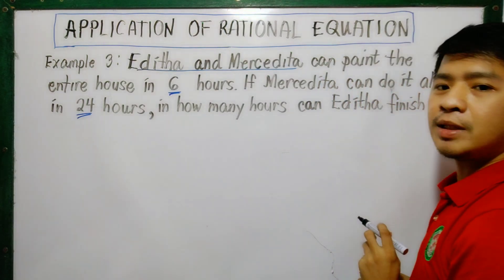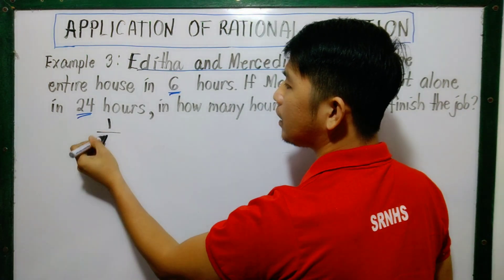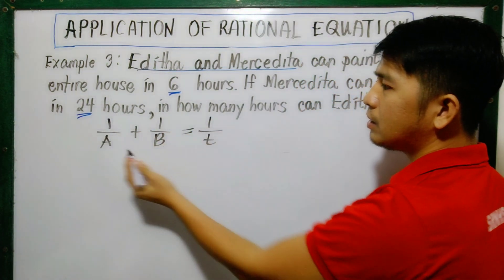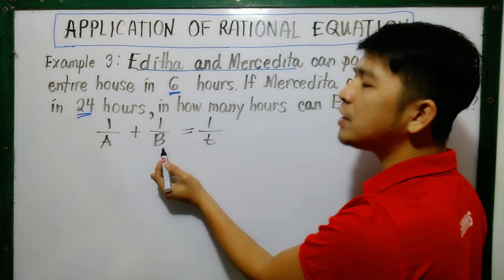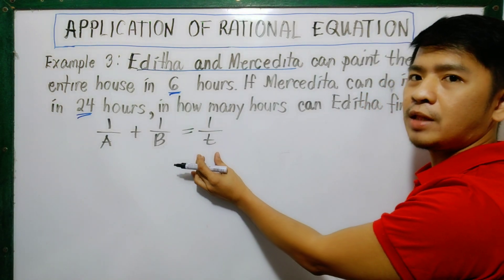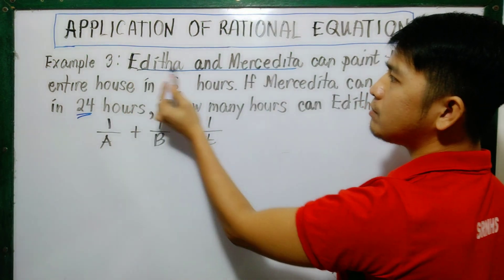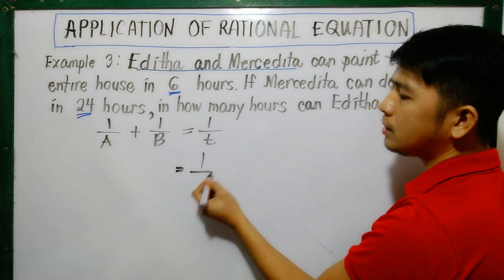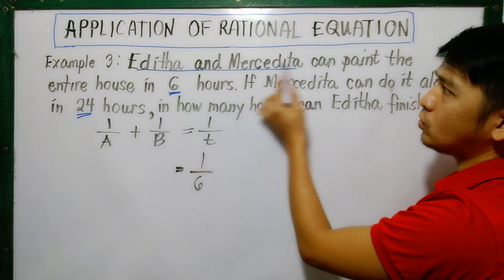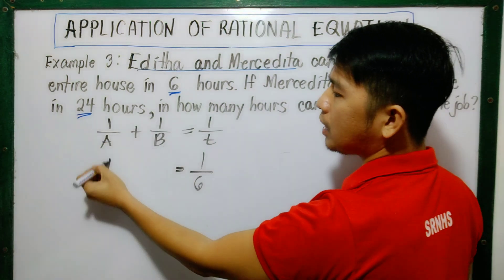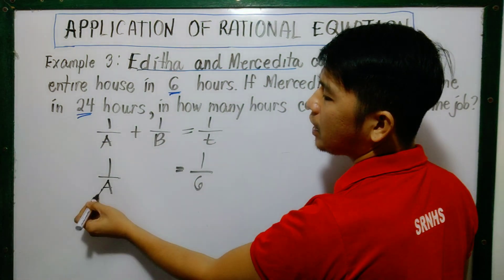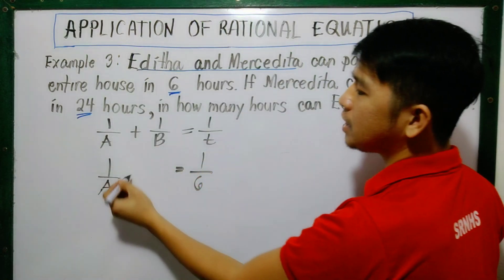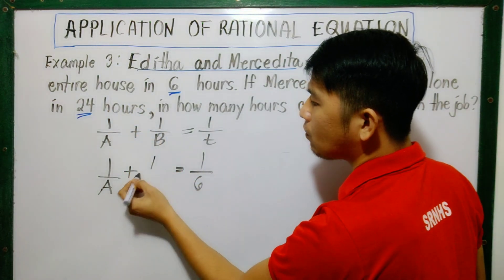Again, the formula we'll use is 1 over A plus 1 over B equals 1 over T. Where A is for Edita and B is for Mercedita, and T is if they work together. It's given here that Edita and Mercedita can paint the entire house in 6 hours, so our T now will be 6, because they worked together. 1 over A is still 1 over A because Edita's time is missing. And for Mercedita, it's given as 24 hours. So 1 over 24.